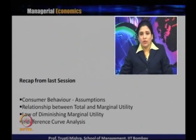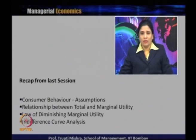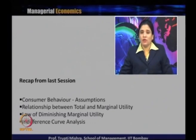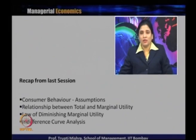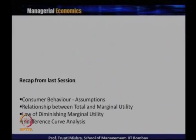We introduced the law of diminishing marginal utility, which tells us that when a consumer keeps consuming a product, after a certain point marginal utility diminishes, sometimes reaching zero and even becoming negative. We also introduced indifference curve analysis, part of ordinal utility analysis, discussing its properties, the marginal rate of substitution, and different types of indifference curves for complementary and substitute goods.